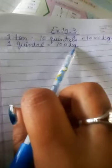If we learn these conversions, we can easily solve the second part of exercise 10.3. Ton is the greatest unit, quintal is the standard unit, and kilogram is the smallest unit. 1 ton equals 10 quintals, which equals 1000 kg, or we can say 1 quintal equals 100 kg.